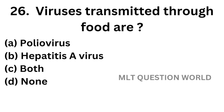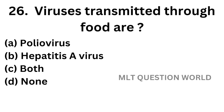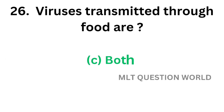Question number 26. Viruses transmitted through food are: option A, Poliovirus; option B, Hepatitis A virus; option C, Both; option D, None. The correct answer is option C, Both. Poliovirus and Hepatitis A virus are transmitted through contaminated food.